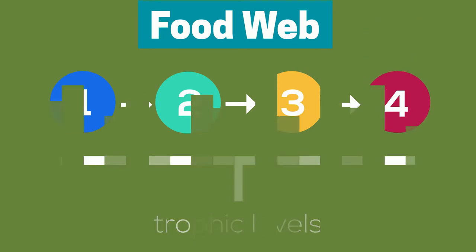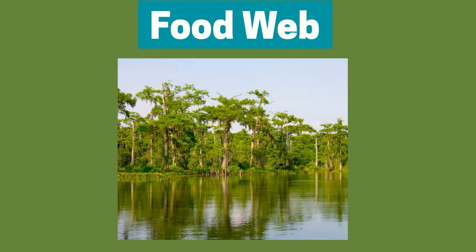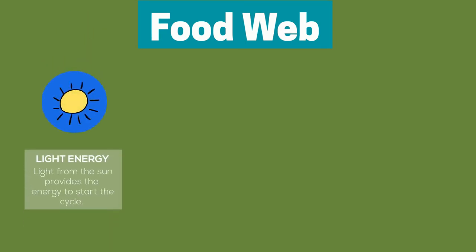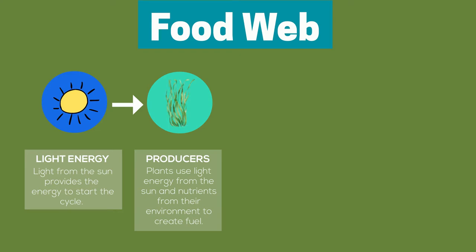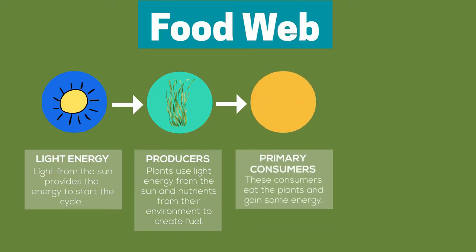Every ecosystem has a different food web, but let's use a typical Florida swamp here as an example. The first level of any web is light energy from the sun. This light provides the energy used by plants, the primary producers of the web, to make fuel through photosynthesis. In a Florida swamp, this could be any underwater plant or algae. The next level constitutes whatever consumer eats these plants and gains energy from it, like fish.